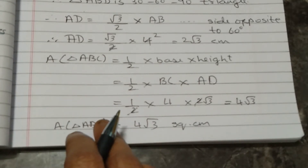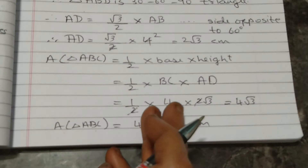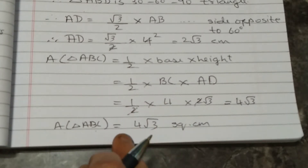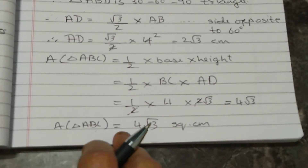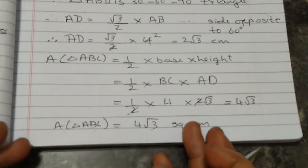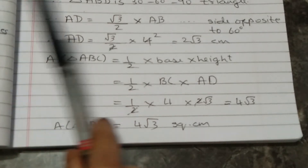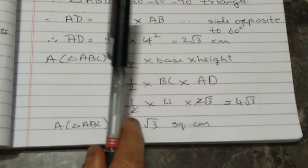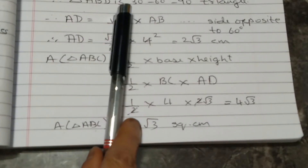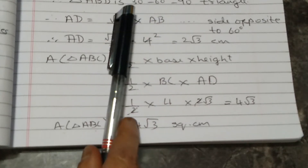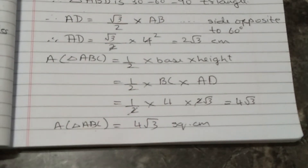Both Method 1 and Method 2 give the same answer: 4 root 3 square centimetre. Students should learn both methods and not neglect Method 2, as it may be asked in activities.